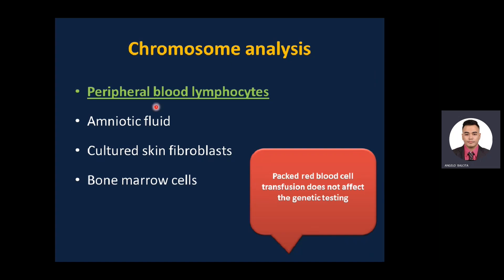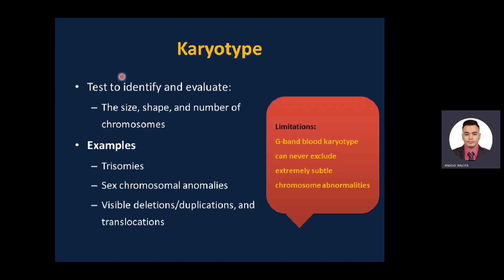For chromosomal analysis, the fastest and easiest method is a blood test using peripheral blood lymphocytes. If a newborn received a packed red blood cell transfusion, this does not affect genetic testing because we test white blood cells, not red blood cells. Other sources include amniotic fluid, chorionic villus sampling, cultured skin fibroblasts, and bone marrow cells.